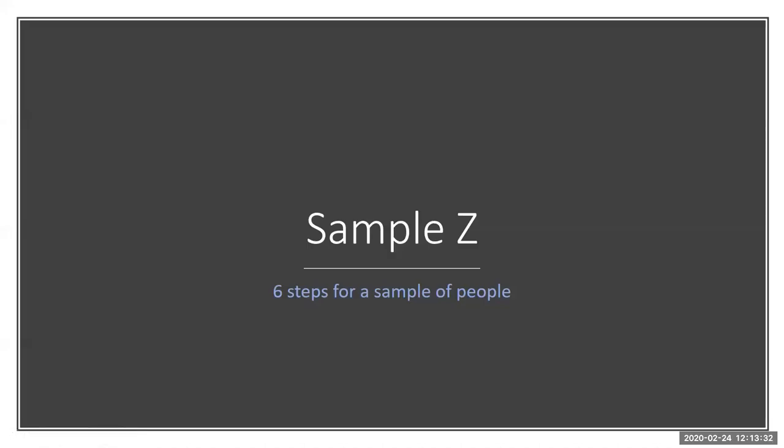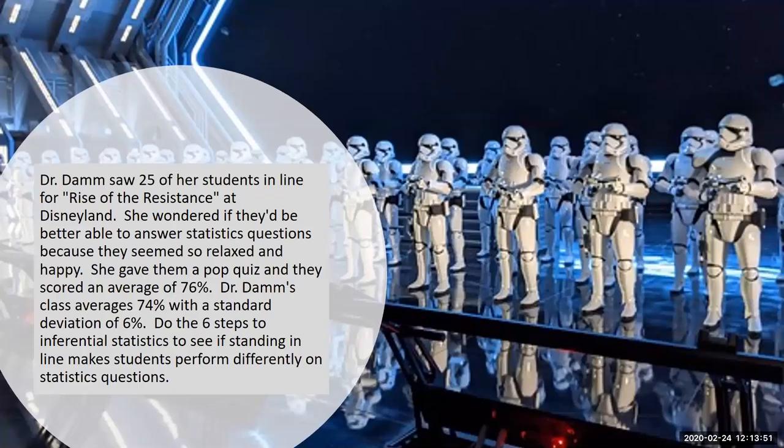Now that we've learned about the distribution of means, I want to show you how we would apply that to a sample Z inferential test. It's going to be very much like the individual Z test — we just have to change our math a little bit. Instead of looking at an individual, this time we're going to do the six steps to look at a sample of people. So let's do that with a fun example.